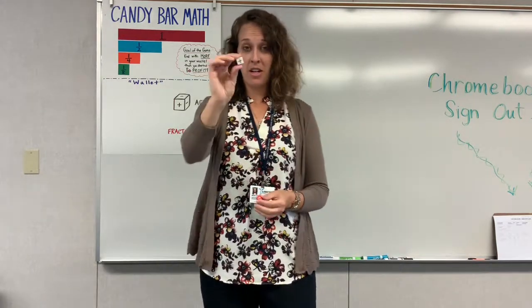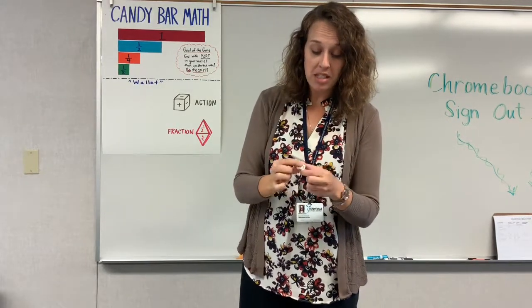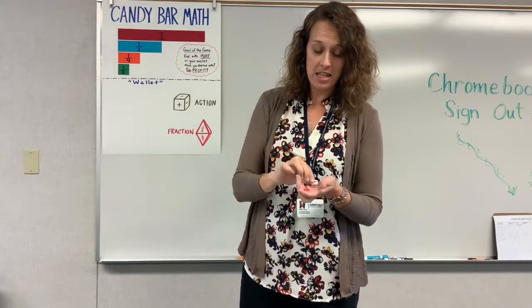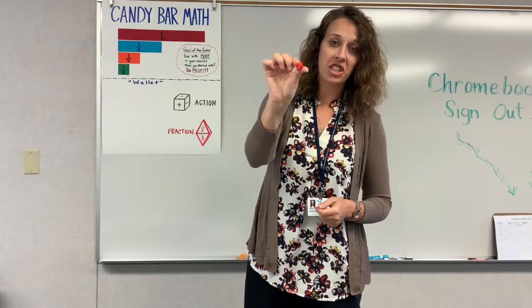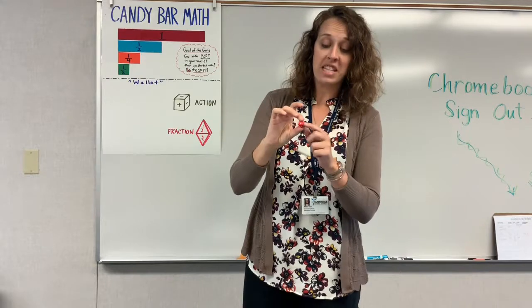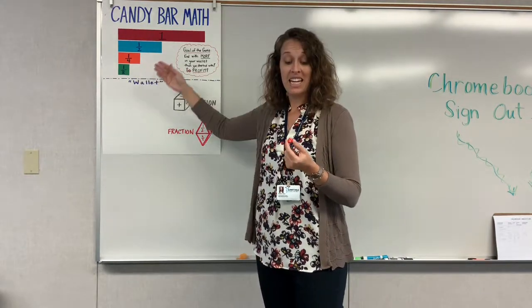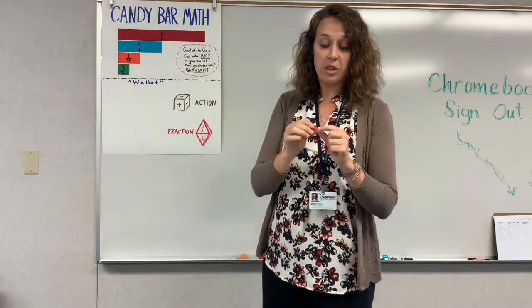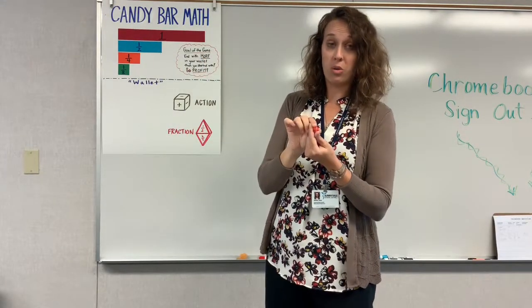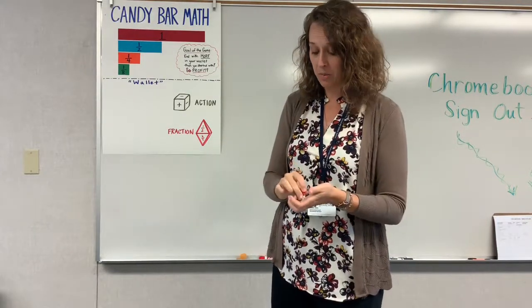In this game, there's an action cube. The action cube has three pluses and three minuses and a fraction dice. The fraction dice you can order online. It's an eight-sided dice with the following fractions: eighths, fourths, or equivalents, halves, and wholes. So it's a special fraction dice, or you can use a spinner that you create, and I'll link that as well.